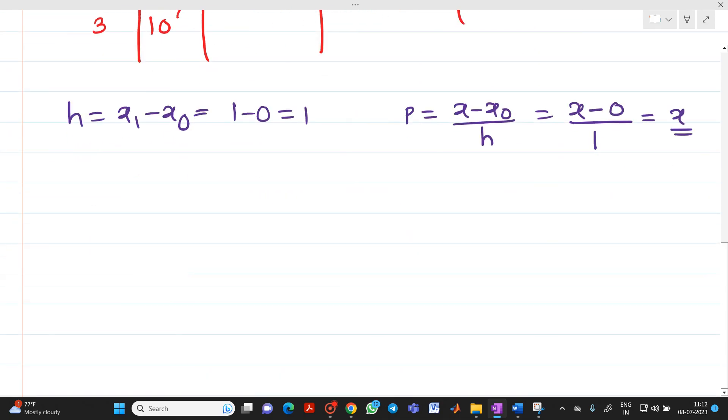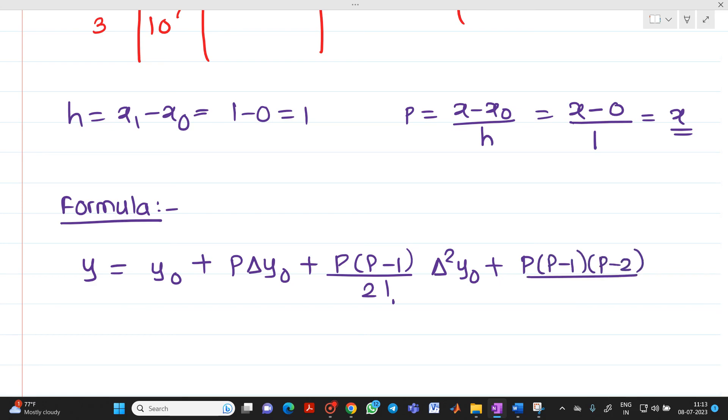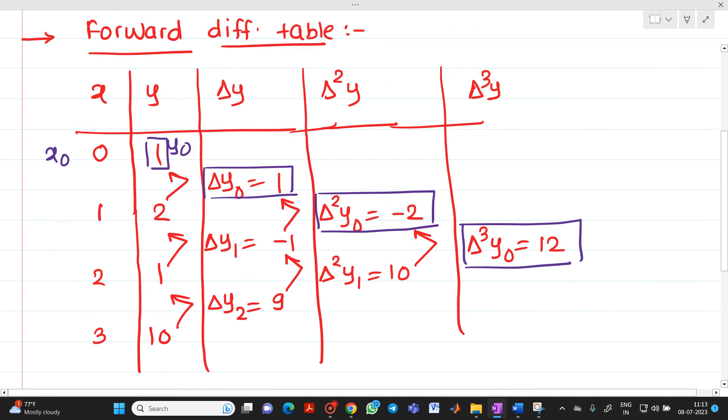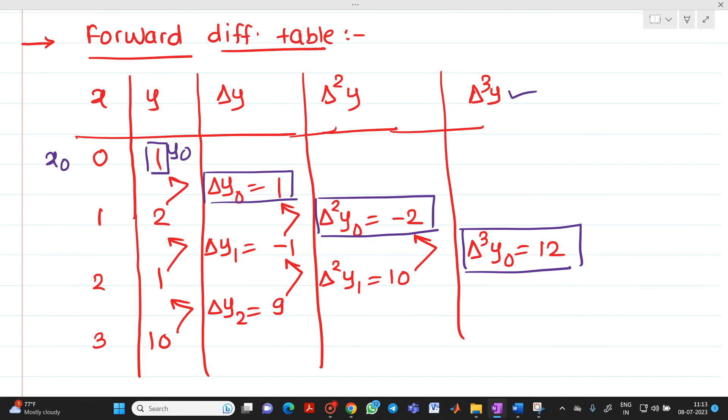Now let me write here formula. So formula, I can write this formula as, y will be equal to y0 plus P into del y0 plus P into P minus 1 upon 2 factorial del square of y0 plus P into P minus 1, P minus 2 upon 3 factorial del cube of y0. So up to this only we have to write because here we have determined del cube of y0.